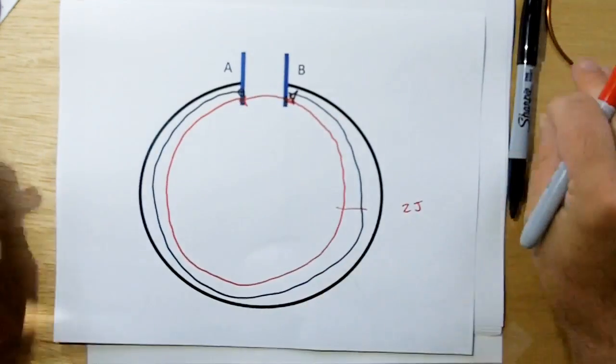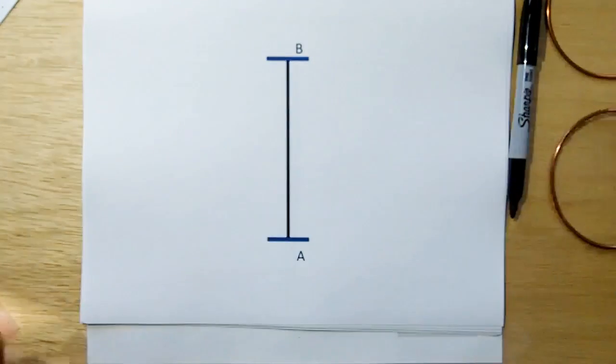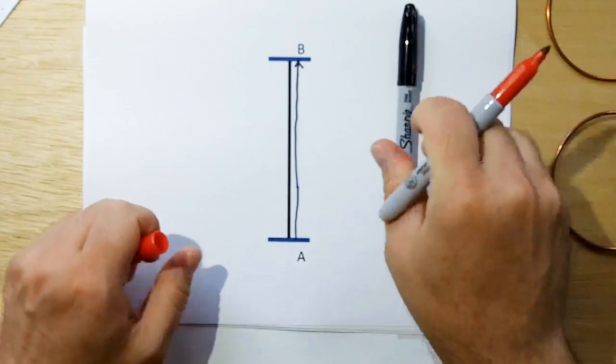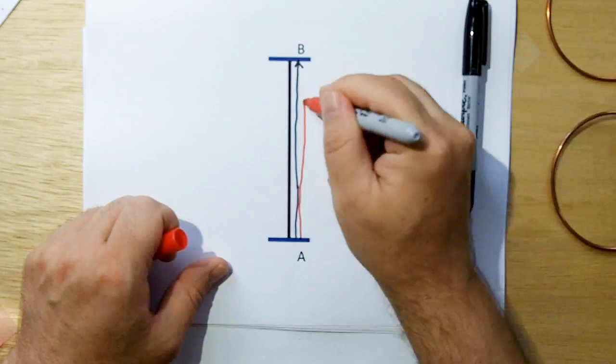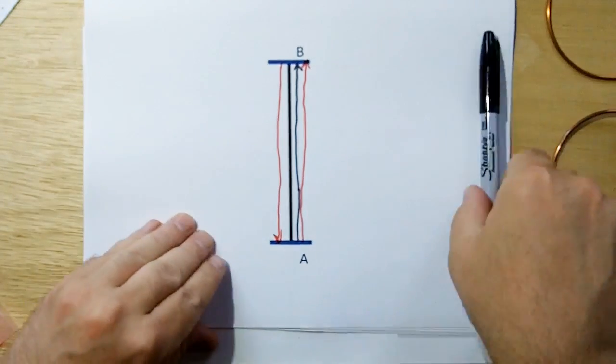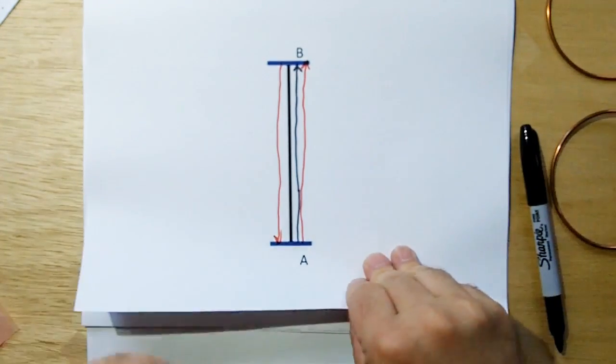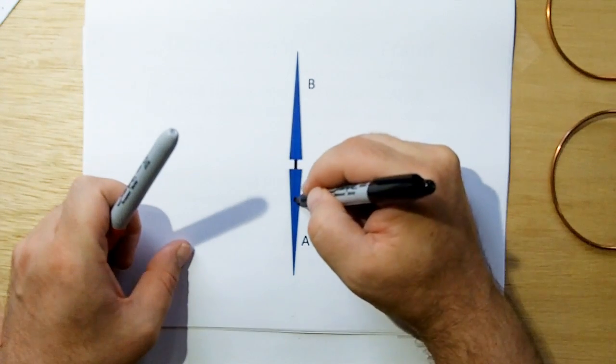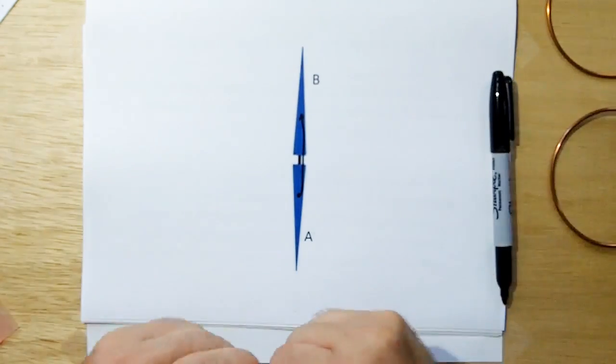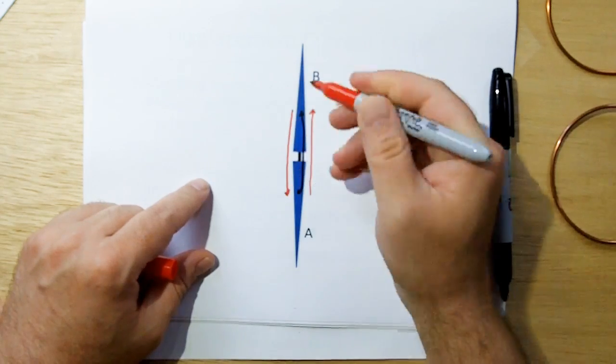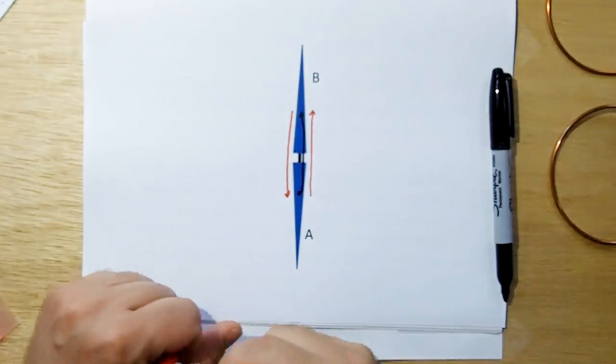So, if we take this loop and we open it up and we draw it this way. If we pull current from A to B, real current, that means our displacement current has to go up and then it has to close, coming back. Now if we fashion these electric plates into the radiators of a dipole antenna, and we move current from A to B, that means we get a displacement current this way, with the current, and we get the closing displacement current across the capacitive coupling from the two points of the dipole.